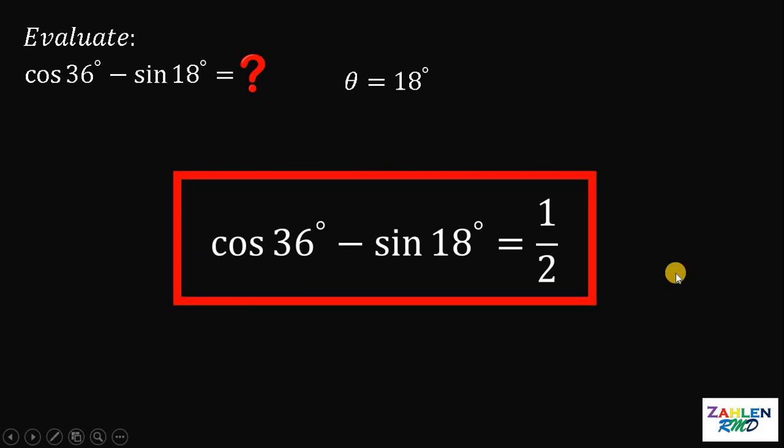Therefore, cosine 36 degrees minus sine 18 degrees equals 1 half. We're done with our first solution. Now here's our second solution using geometry.